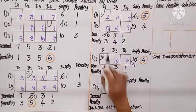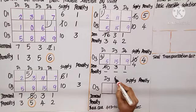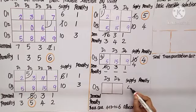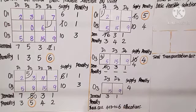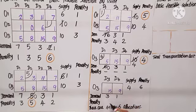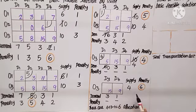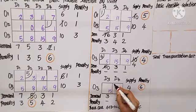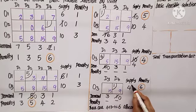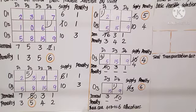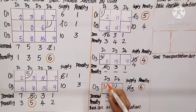We hide column D1 and are left with D3 and D4. Supply for O3 is 4, demand is 3 for D3 and 1 for D4. Calculating the penalty: 15 minus 9 is 6. D4 has only one cell, so no penalty. Highest penalty is 6. The minimum cost in that row is 9. Demand is 1 and supply is 4, so minimum is 1. We allocate 1. This becomes 0, and 4 minus 1 gives 3.